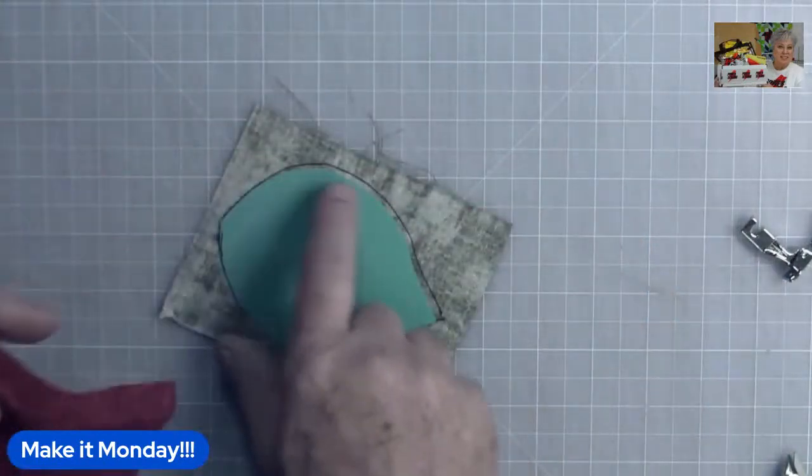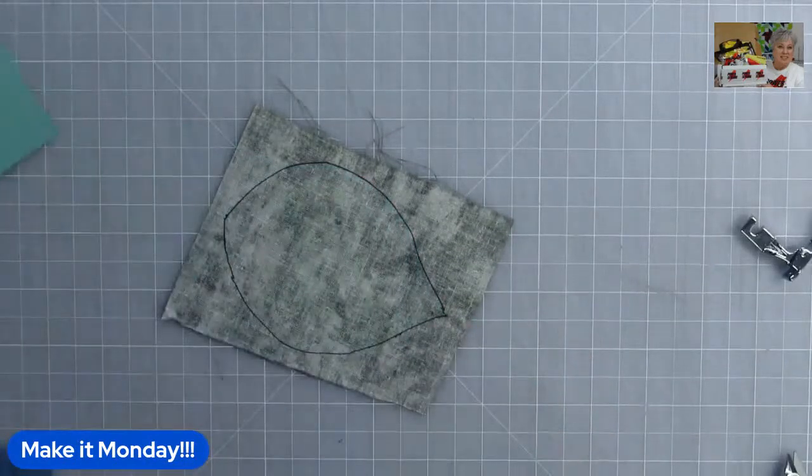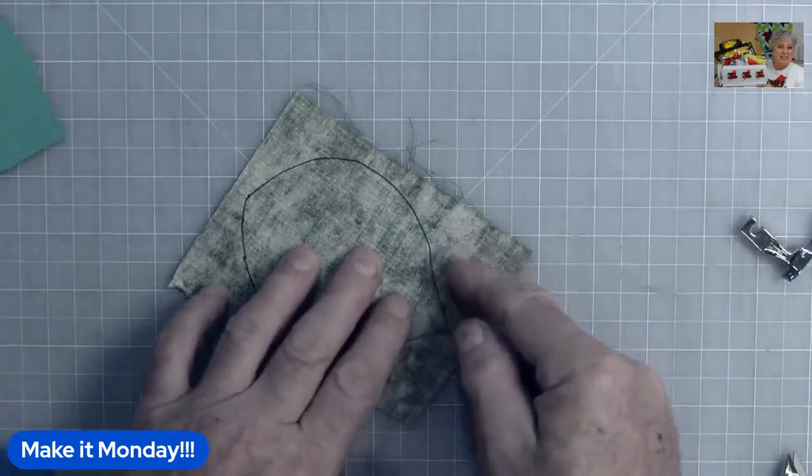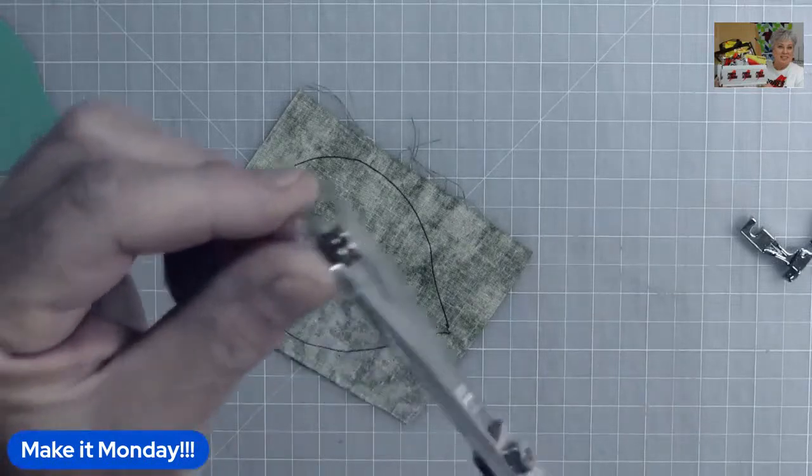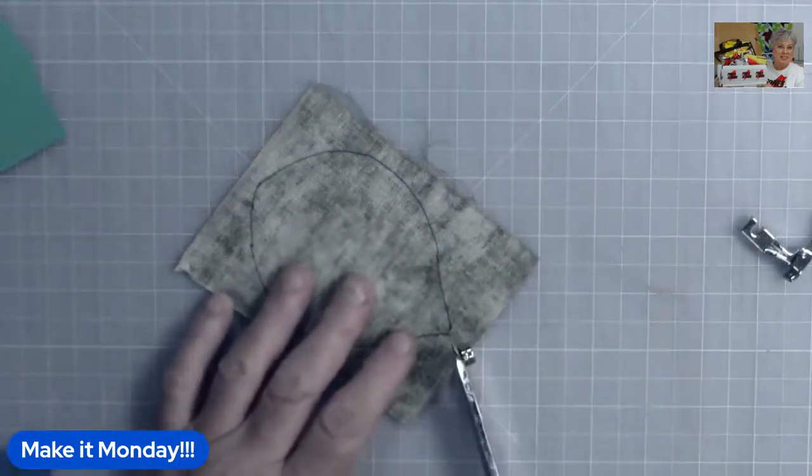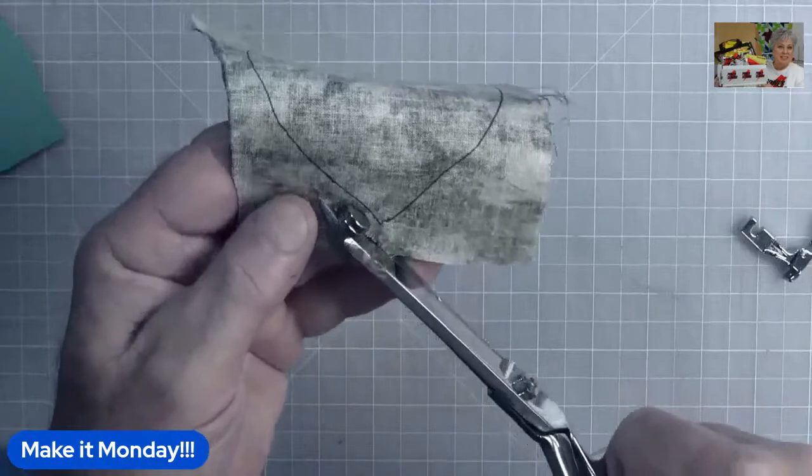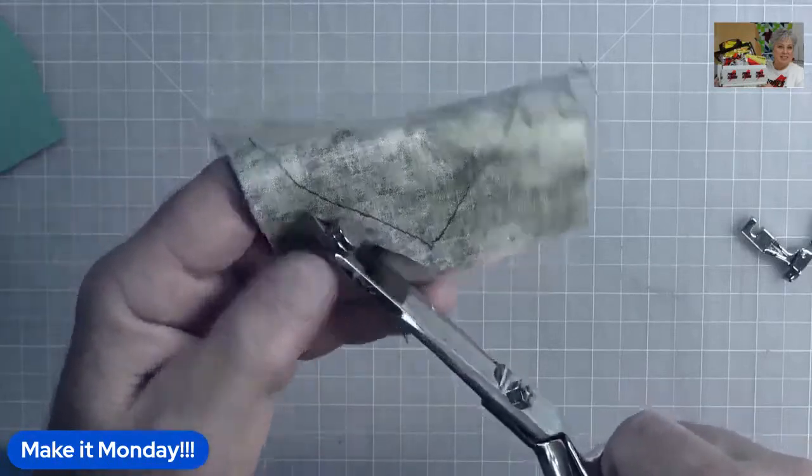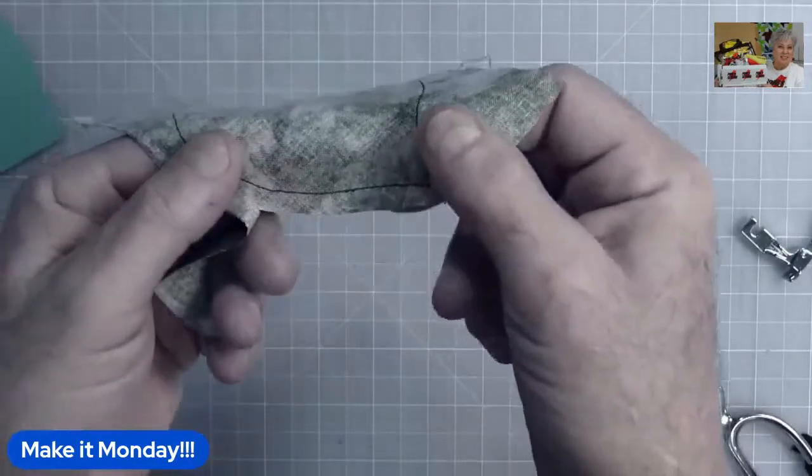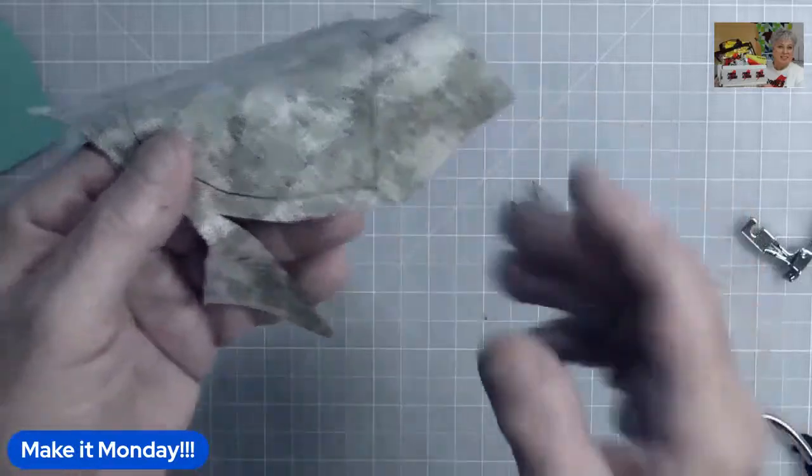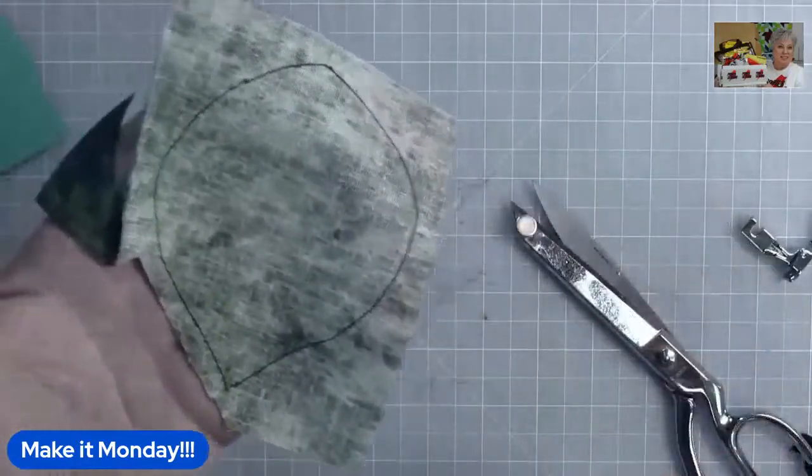But first, like in this case where it's curved, we need to add a seam allowance. There's a couple different ways to do it. You can either measure with a quarter inch ruler, or we could do this little trick where you put a magnet on the tip of your scissors and guide along where the side of the magnet is along my drawn line. I can get a fairly accurate quarter inch seam allowance. And then I would go ahead and do my clipping and turning, because when you're doing a curved piece, it takes a little bit of clipping.